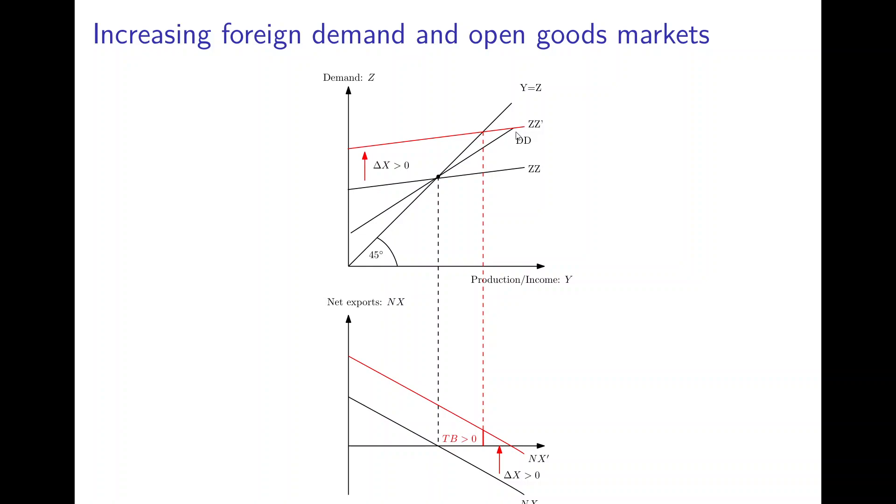The reason is that at that point domestic demand and total demand for domestic goods are the same, and that can only be the case if exports and imports are the same, so net exports are zero, and that's exactly that point.